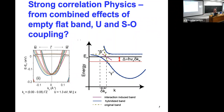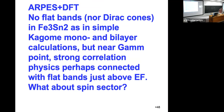So we looked for a flat band — I don't think we found it directly, though we did find it in DFT calculations. If you look in detail at the photoemission data, which we believe is now bulk-sensitive and very well resolved, it seems that there's actually an interesting many-body physics effect worth looking at. In summary: ARPES plus DFT shows no flat bands nor Dirac points in Fe₃Sn₂ as in simple kagome mono- and bilayer calculations, but near the gamma point there is strong correlation physics perhaps connected with flat bands just above the Fermi level.